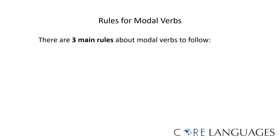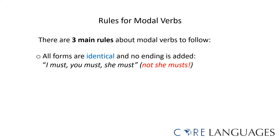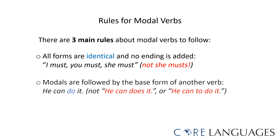There are three main rules when using modal verbs. First, all forms are identical and no ending is added. For example, I must, you must, she must. It is important to note that it is not 'she musts' — no 's' is added in the third person. Second, modals are followed by the base form of another verb. For example, he can do it. It is incorrect to say he can does it, or he can to do it.